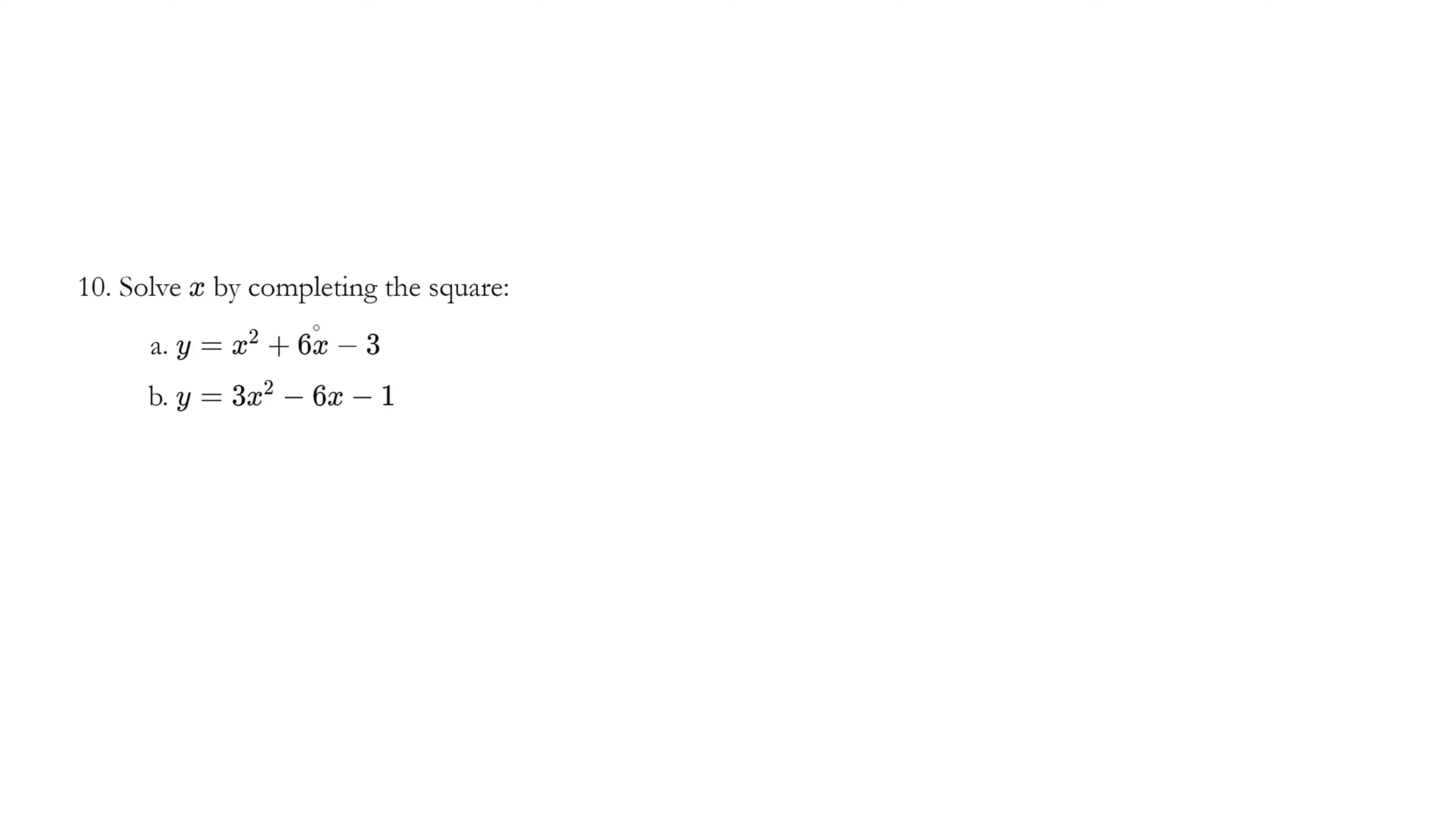Let's solve x by completing the square. Now solving the x-intercepts means we set y equals zero, so let's try this question first. Zero is equals to x squared plus 6x minus 3.